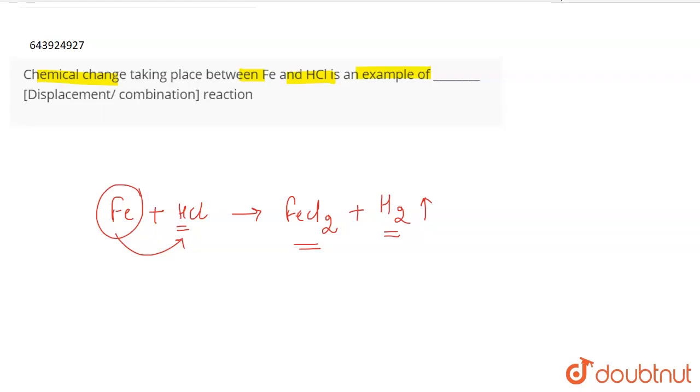So what type of reaction is taking place here? This is a displacement reaction because iron is more reactive than hydrogen, and a more reactive substance can displace a less reactive substance in a chemical reaction.